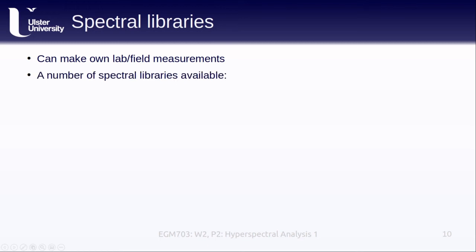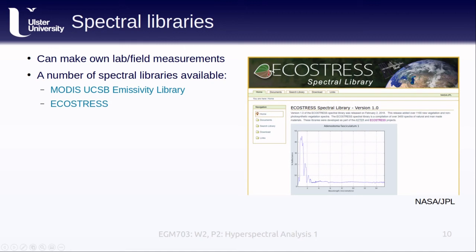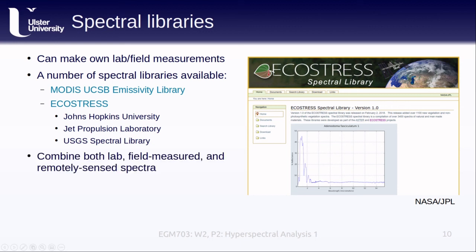Fortunately, there are a number of spectral libraries available. We've seen some of these already, such as the MODIS UCSB Emissivity Library, or the ECOSTRESS Spectral Library, which combines a few older libraries, including the Johns Hopkins University Spectral Library, the Jet Propulsion Laboratory Spectral Library, and the USGS Spectral Library. These spectral libraries are a combination of both lab-derived, field-measured, and remotely sensed spectra. They're a great resource for a lot of remote sensing applications, but especially for hyperspectral remote sensing. Additionally, some software packages include spectral libraries, making it relatively easy to include them in your workflow.